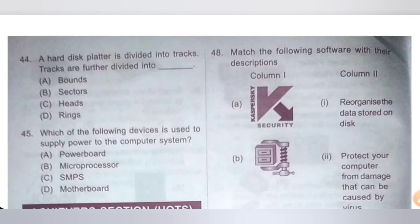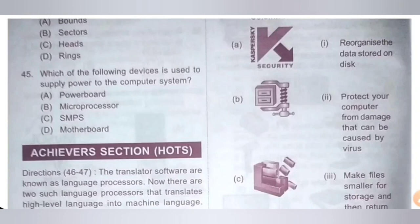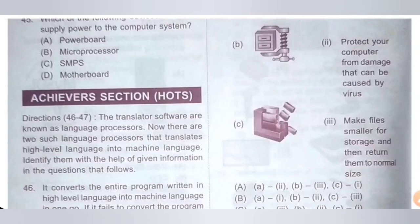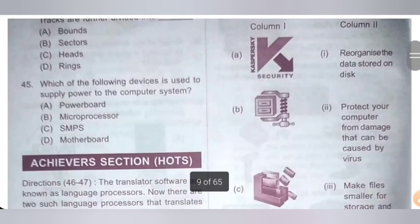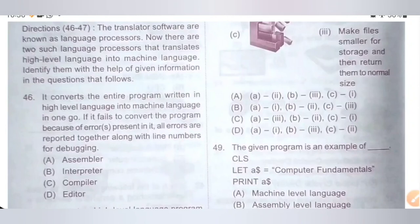Question 48: Match the following software with their descriptions. A — antivirus software: it protects your computer from damage caused by viruses, so A matches 2. B — it makes files smaller for storage and returns them to normal size, so B matches 3. C — it reorganizes data stored on disk, so C matches 1. The correct answer is Option A: A2, B3, C1.